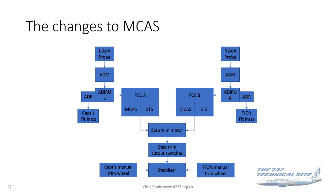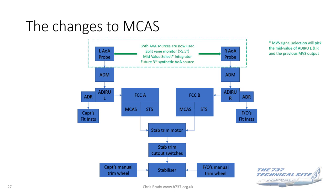What changes were made to MCAS to fix this? First, in the alpha system, both angle of attack sources are now used. There's a split-vane monitor which looks for a difference of 5.5 degrees between the vanes. There's a new system called the mid-value select integrator, which picks the mid-value of the two alpha probes and the previous output. And in future, Boeing are going to introduce a synthetic angle of attack source from the MAX 10 onwards.